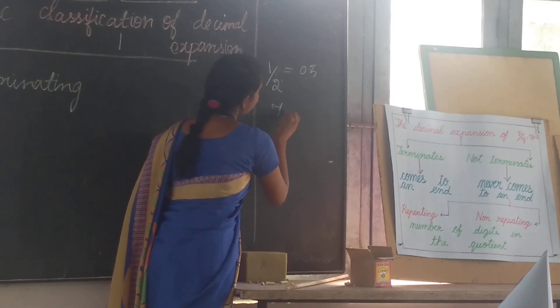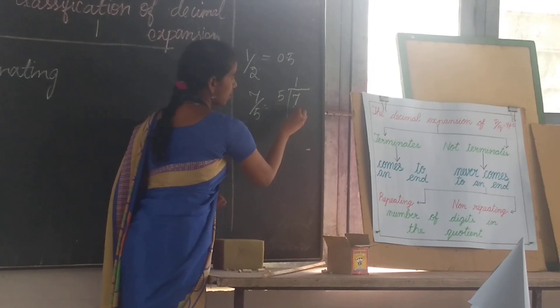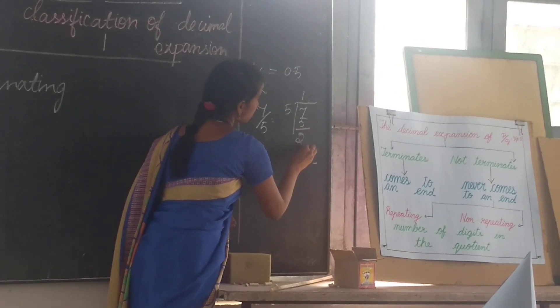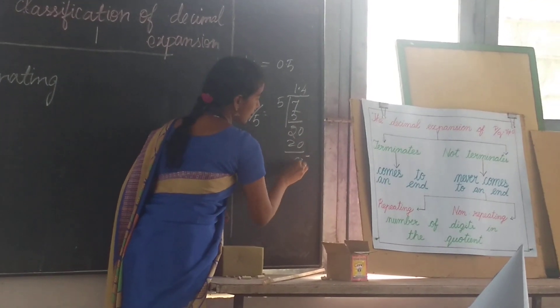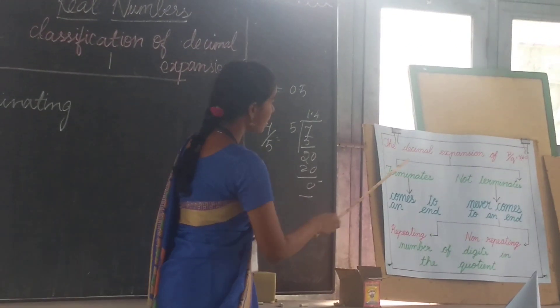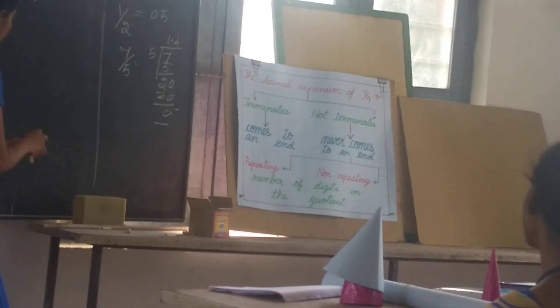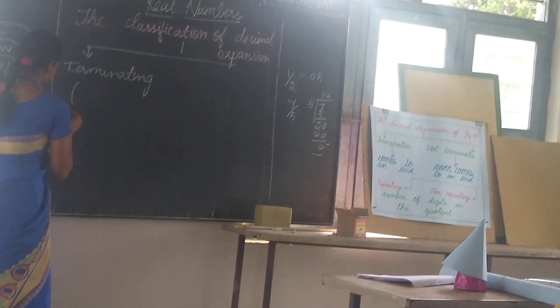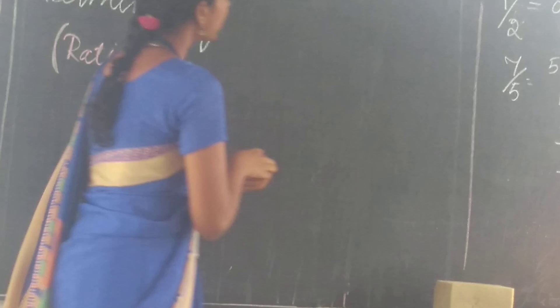Now, tell me what is the division of 7 by 5. See, I divide it. 7 by 5. 1 times 5 is 5, 2. How much? 0. So 5 goes into 20. The remainder becomes 0. Terminating means it comes to an end. The remainder becomes 0. Therefore, it is a rational number.